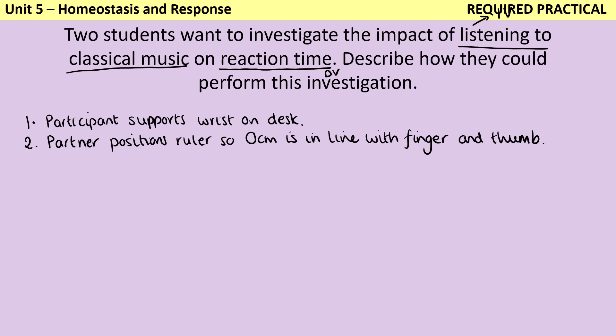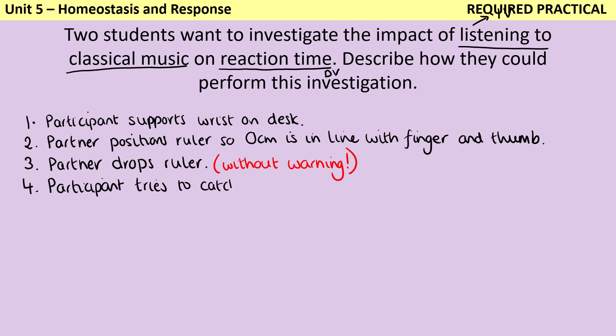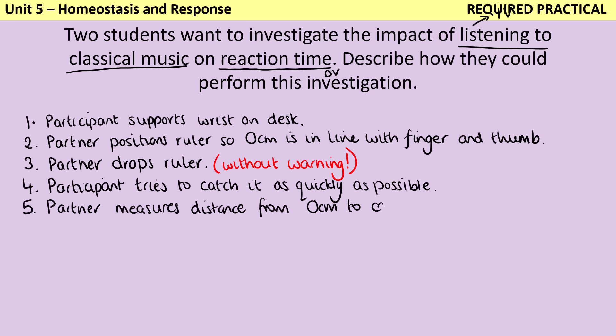The partner is going to drop the ruler and crucially, they're not going to give you any warning. Writing about counting down before dropping it would give you warning and we would underestimate your reaction time. The person with their wrist on the desk is going to catch the ruler as quickly as they can, and then we can measure the distance that's travelled, which as long as you've started at zero is just going to be the number that you're holding on to.